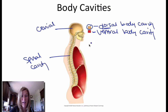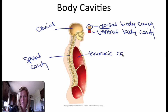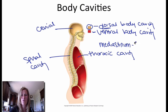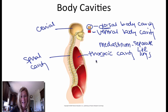The ventral body cavity is divided into a couple of specific cavities. Here we have the thoracic cavity. The thoracic cavity can actually be divided by a mediastinum. The mediastinum is going to separate the left and right lungs within the thoracic cavity. The thoracic cavity is separated from the abdominal cavity by the diaphragm.